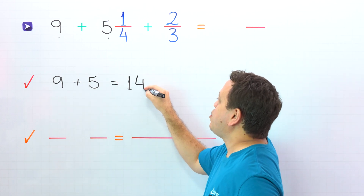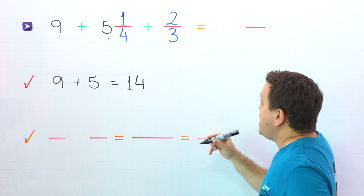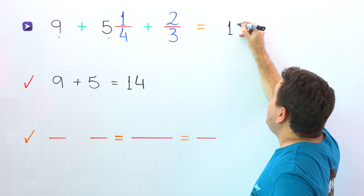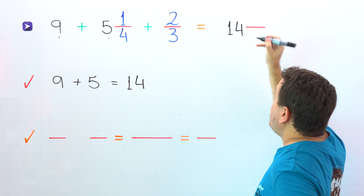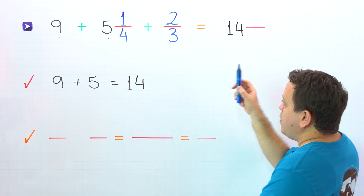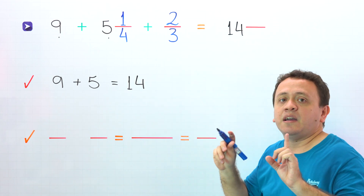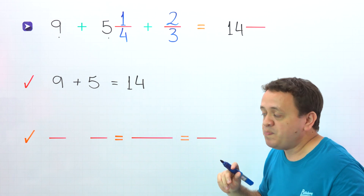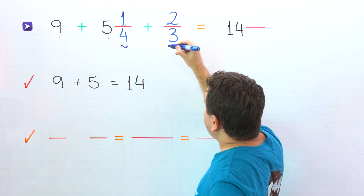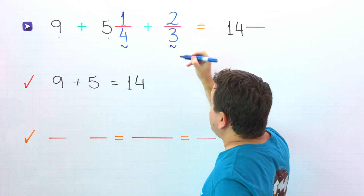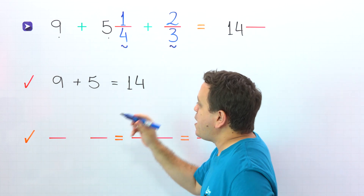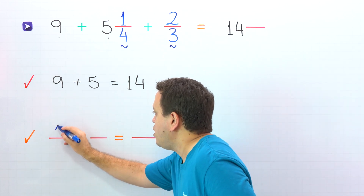14 — that is correct. Then we put 14 in the answer. We have the sum of the whole numbers. It's time to add the fractions. In this problem, the fractions are 1 fourth and 2 thirds. 1 fourth is the fractional part of the mixed number.